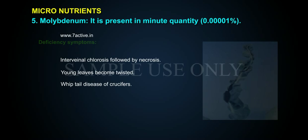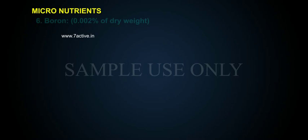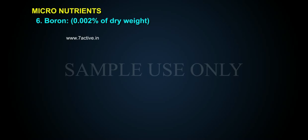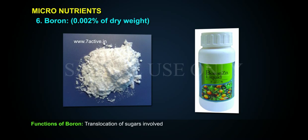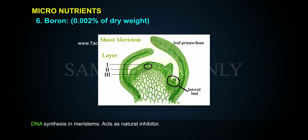Boron constitutes 0.002% of dry weight and is sourced from soil, absorbed as borate ions (H2BO3-). Its functions include the translocation of sugars, involvement in DNA synthesis in meristems, and it acts as a natural inhibitor.